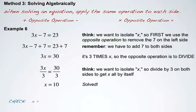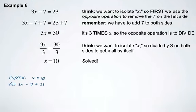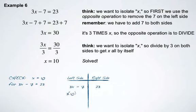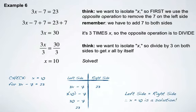We're going to check our solution, x equal to 10, in the original equation 3x subtract 7 equals 23. So our left side was 3x minus 7, and our right side is 23. 3 times 10 subtract 7 on the left gives us 30 subtract 7, which is 23. Left side equals right side, so x equal to 10 is a solution.